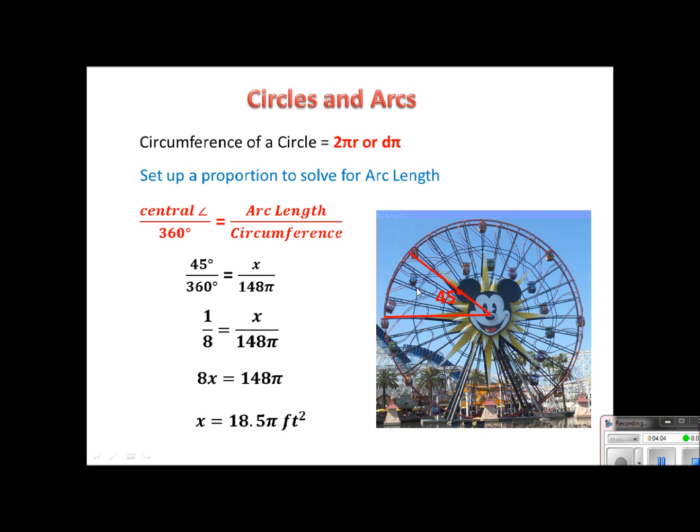I figured out that this arc length from here to here on Mickey's Ferris wheel is 18.5π feet.